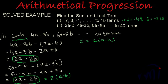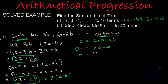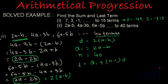We already have the first term, which we represent as a1 — since a is already used — so a1 equals 2a minus b. The series has n equal to 40 terms. Next we find the last term using the formula: last term l equals a1 plus (n minus 1) times d.